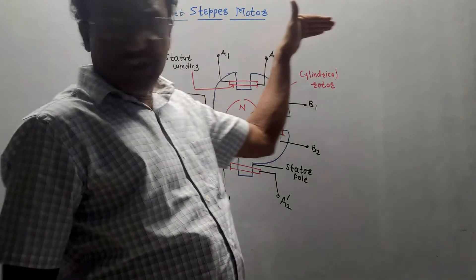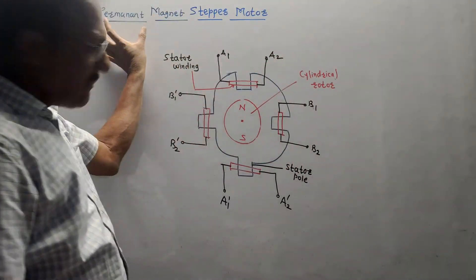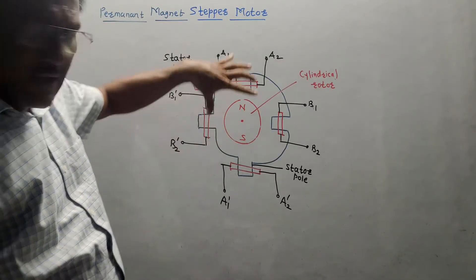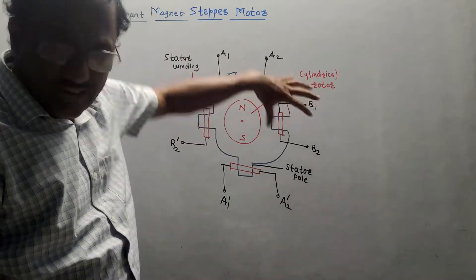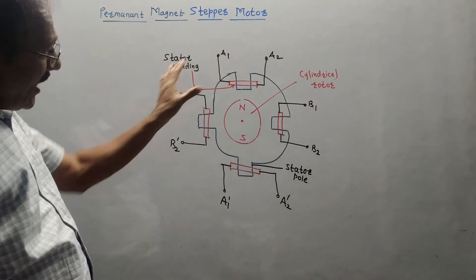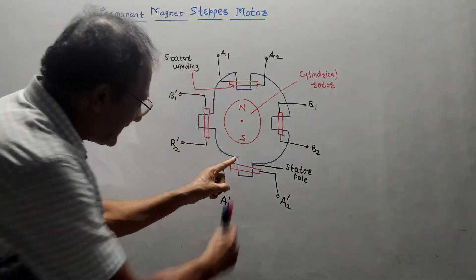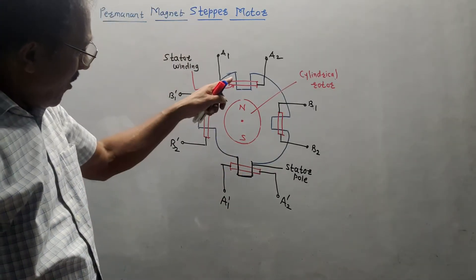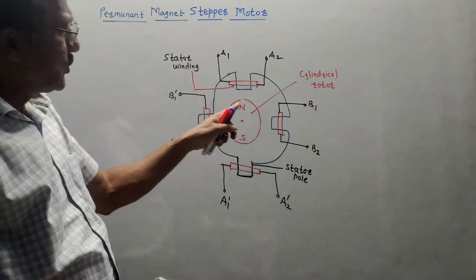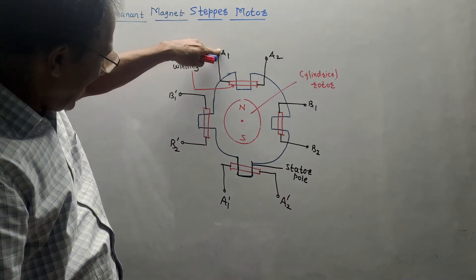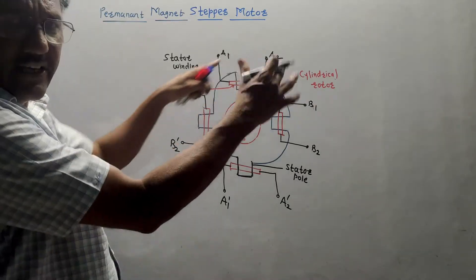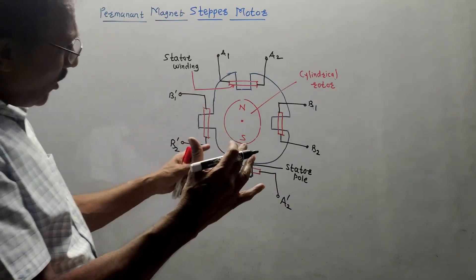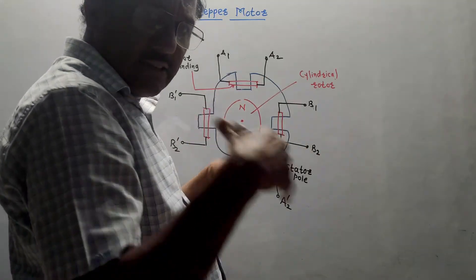The next part is permanent magnet stepper motor. This is another type of stepper motor. As the name indicates, it consists of a permanent magnet. This is the permanent magnet having two poles, North and South pole. It is in the form of cylindrical rotor. This is actually cylindrical in nature. Now, I have shown different stator windings. This is called as a stator pole. This type of section. This is a stator pole. On each stator pole, different windings are shown. These windings are actually marked as A1, A1 dash, similarly B1, B1 dash and A2, A2 dash, B2, B2 dash. The operation is pretty simple. In this case, the rotation of this rotor depends on the energizing sequence.